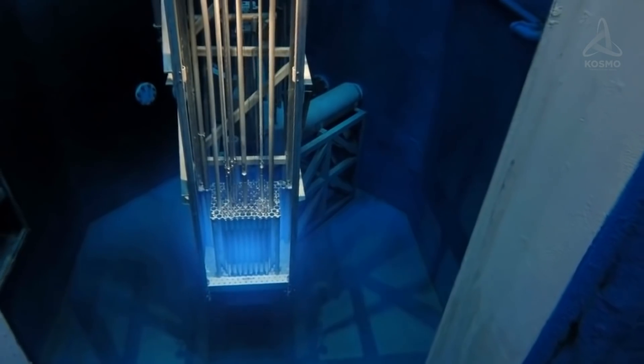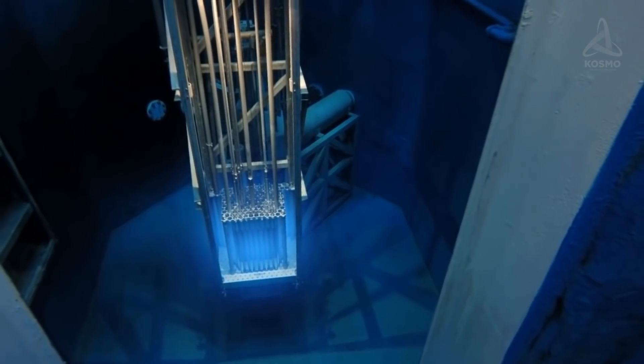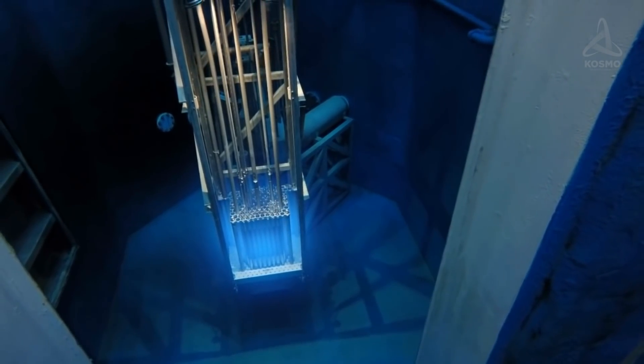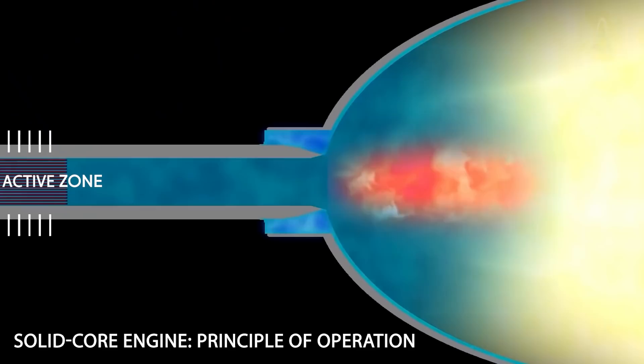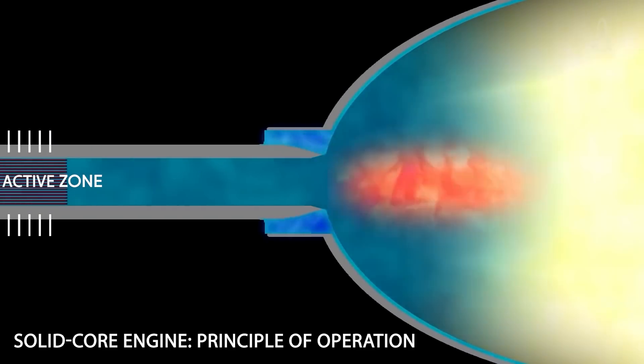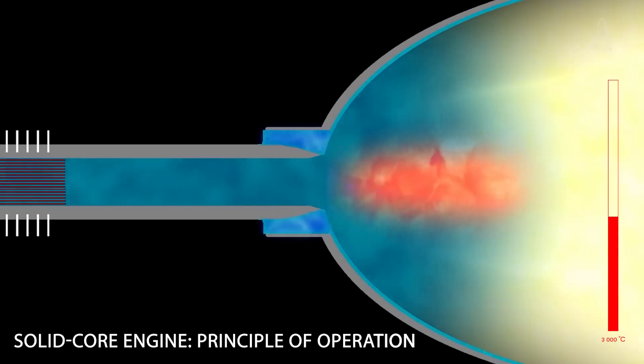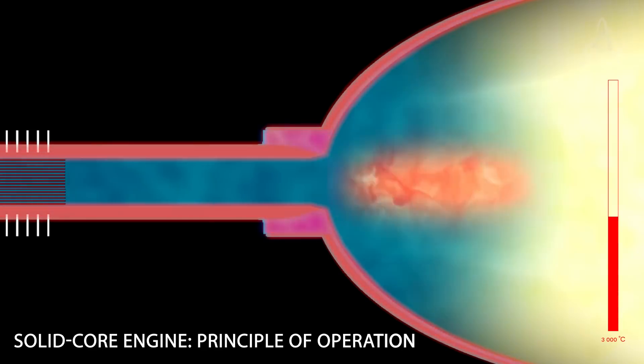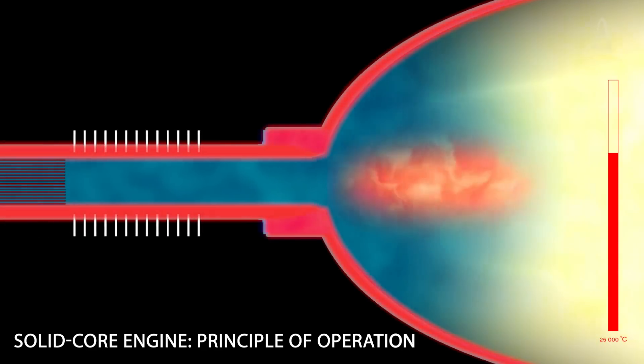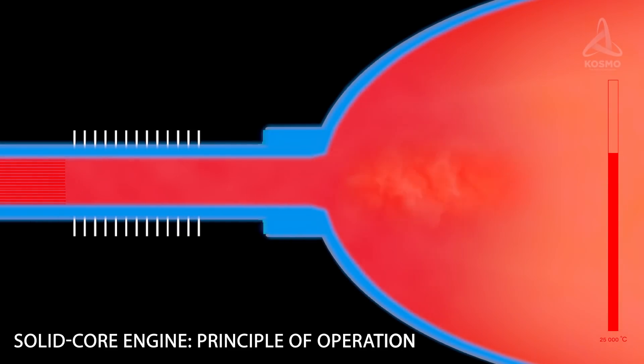Besides, the solid core nuclear thermal thruster specific impulse is at least twice as high as that of today's chemical powered ones. The temperature of the active zone of a solid core nuclear thermal rocket mustn't exceed 3000 degrees Celsius on account of the destruction hazard of the construction elements. On increasing the temperature up to as high as around 25,000 degrees Celsius, the inner part of the reactor will crumple to turn into a cloud of red-hot radioactive magma.